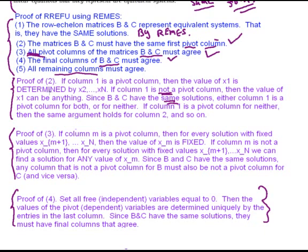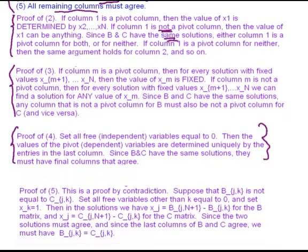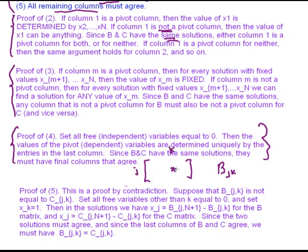This is actually proof by contradiction. We're going to suppose the opposite of what we want to prove. What we want to prove is that all entries of B and C are the same. So let's suppose that B_jk is not equal to C_jk - that is, the entry in the jth row, kth column of B is not equal to the corresponding entry of C. I'm supposing that this entry in B is not equal to the entry in C.